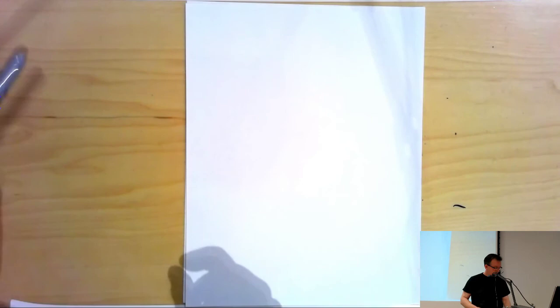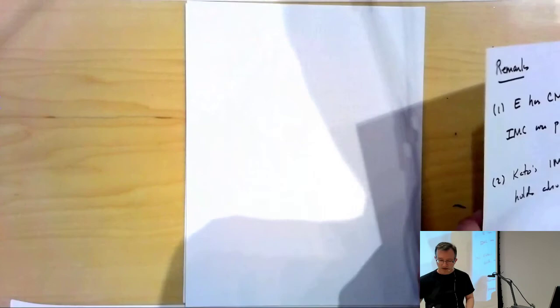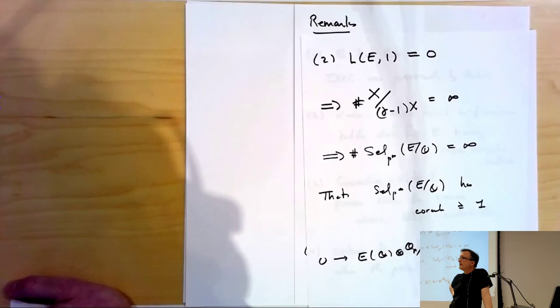Any questions? In Corollary 1 — the slide just behind — you said it implies some sort of key part of BSD. What would be needed to get all of BSD from it? The question is what I mean when I say this implies the p-part of Birch–Swinnerton-Dyer. So let's recall what BSD is: there are two parts. The order of vanishing of L(E,s) at s=1 equals the rank of the elliptic curve — that's the part you get paid money for. The rest you do for fun.